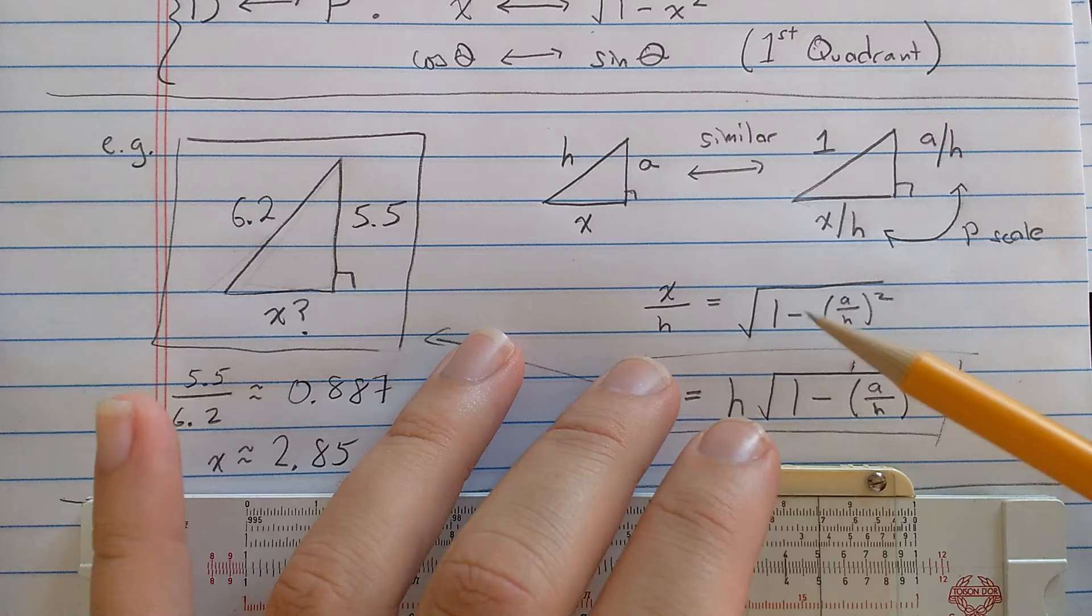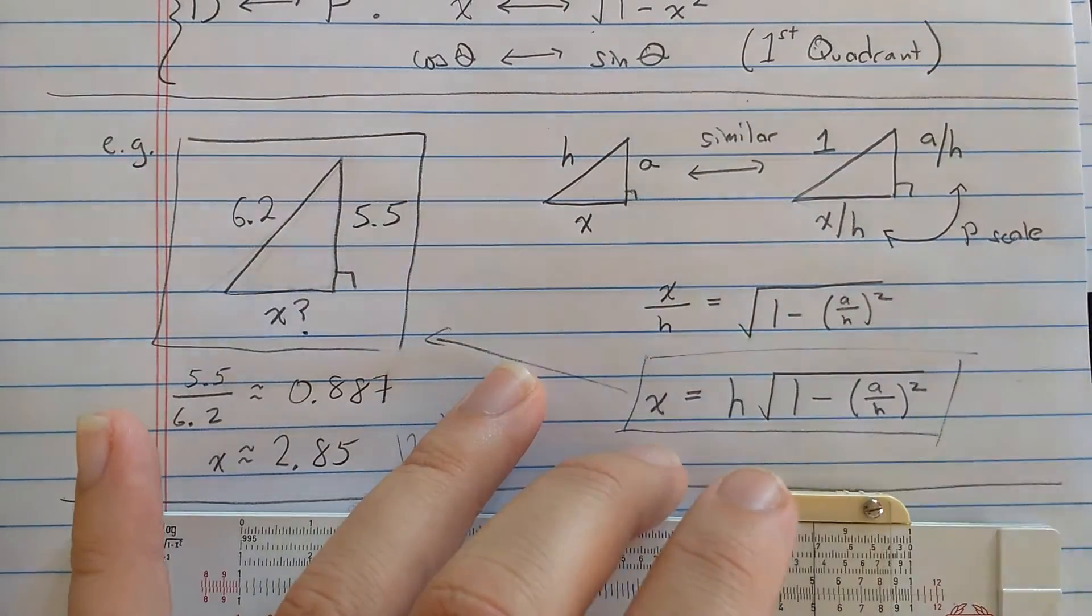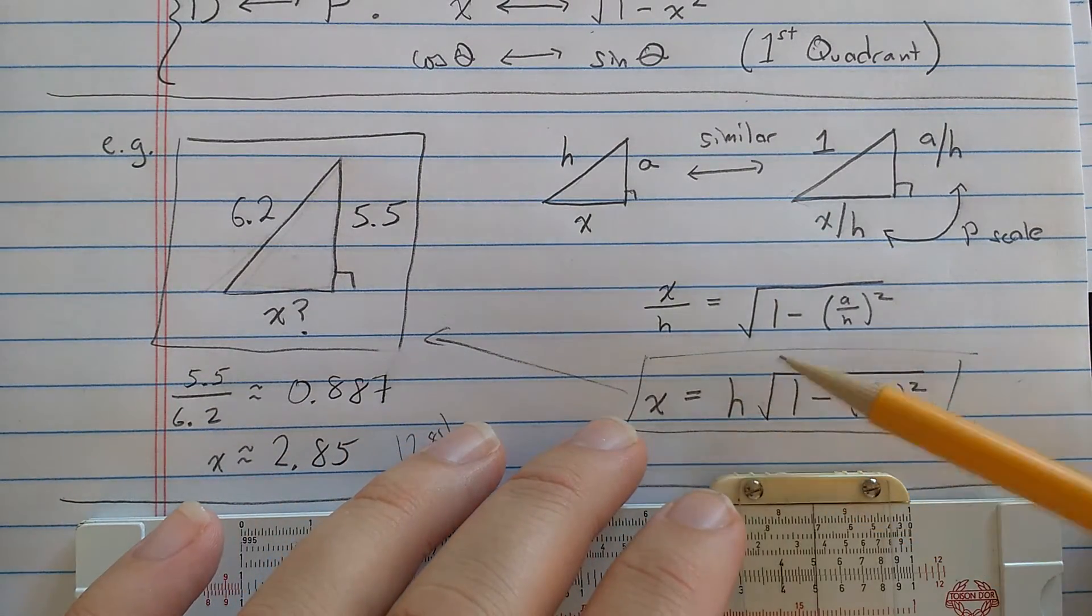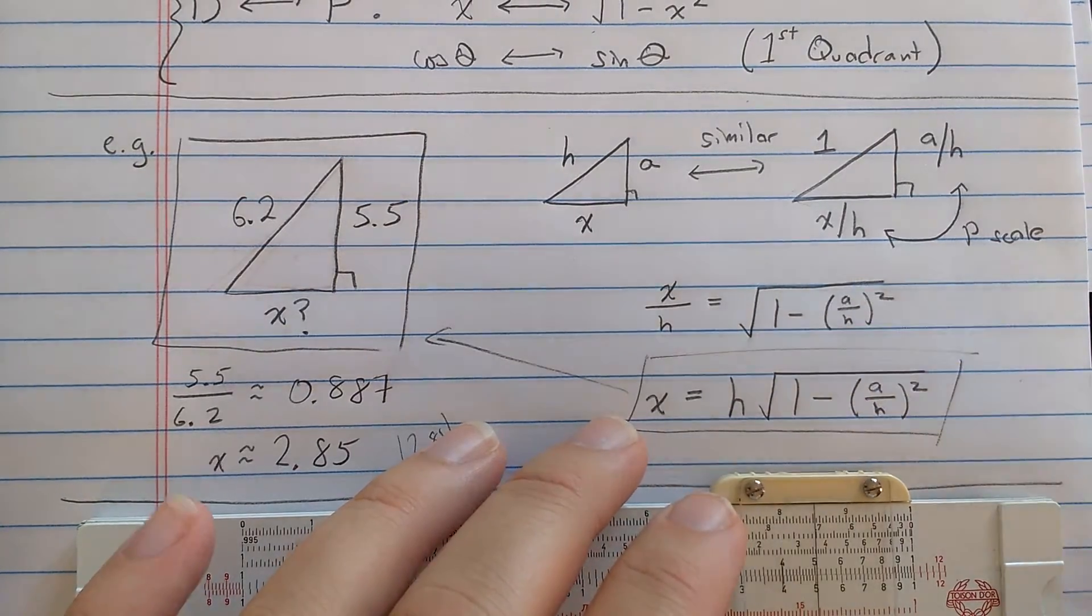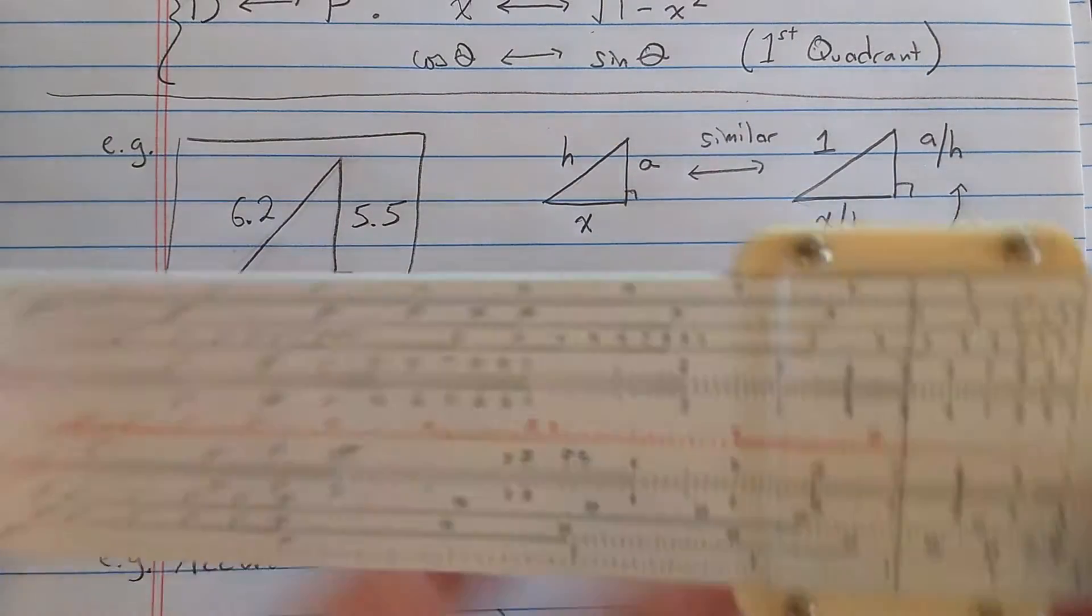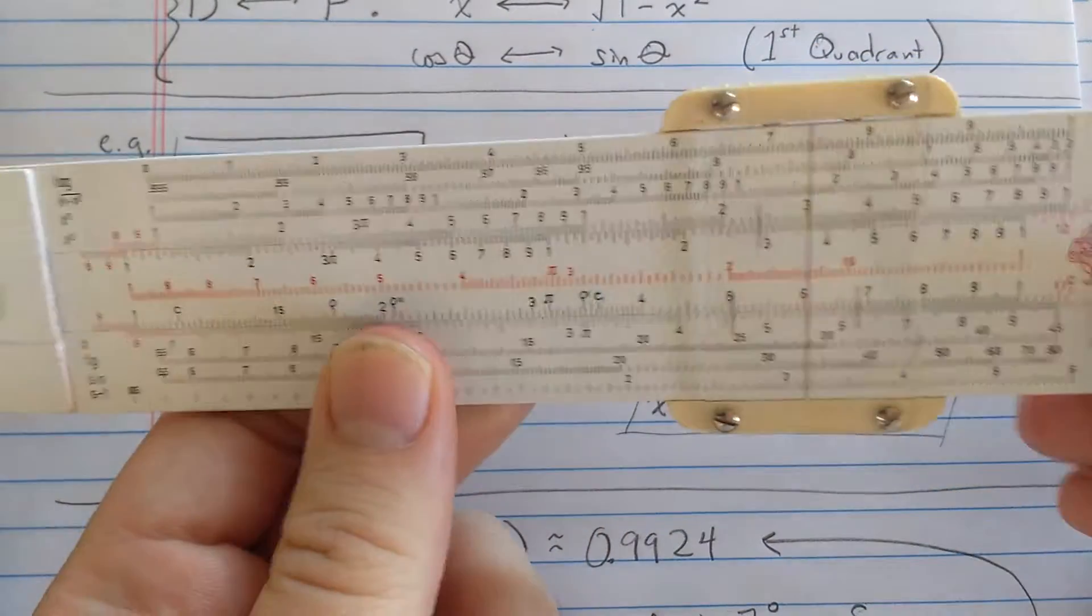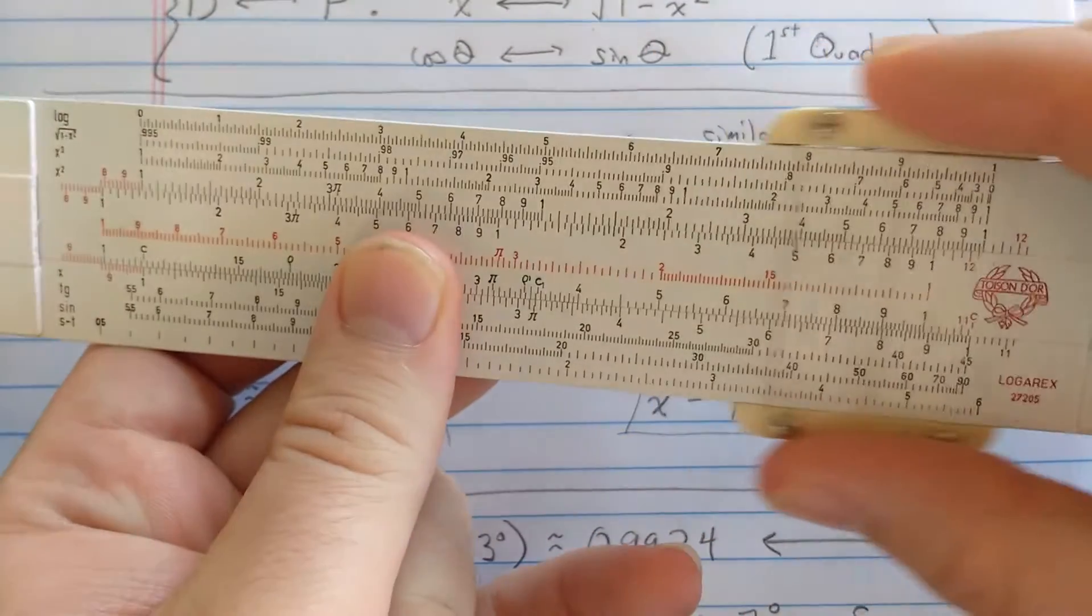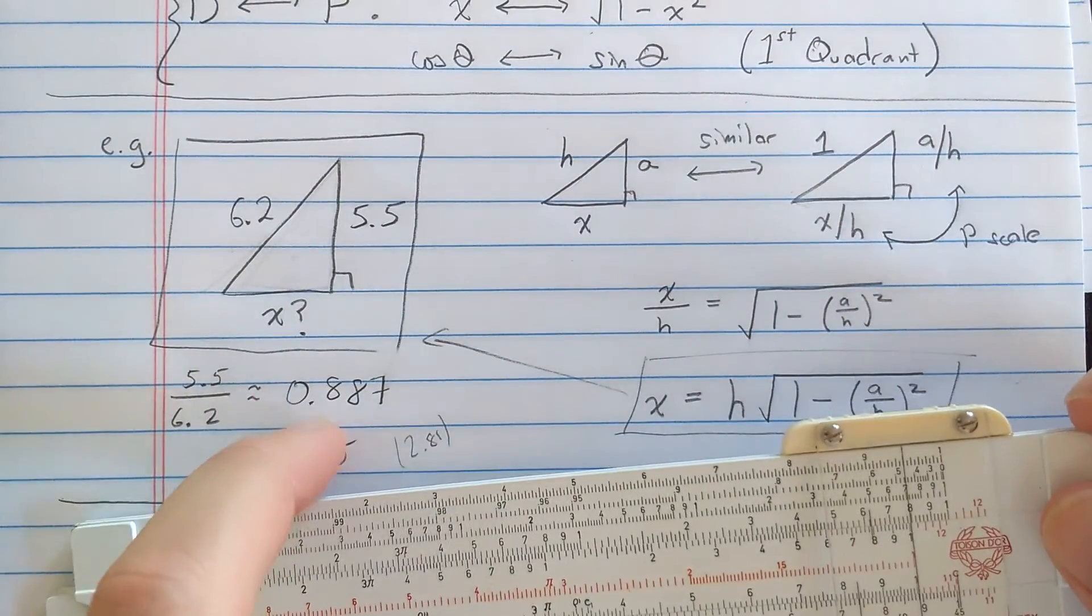Now the nice thing is in the scaled triangle, I can convert between this side length and this side length using the P scale. So in other words, x over h is square root 1 minus a over h squared using the Pythagorean theorem. You can see why this is called the P scale. And then to recover x, I'll multiply that result by h.